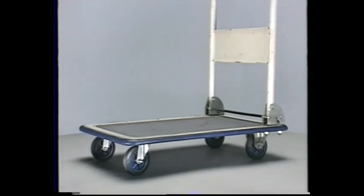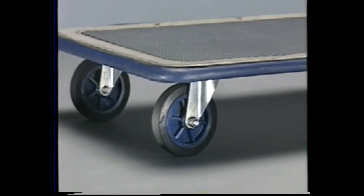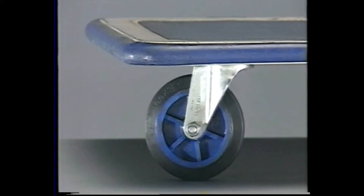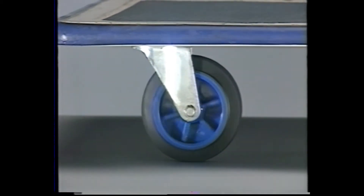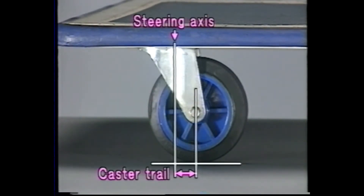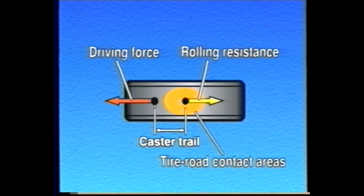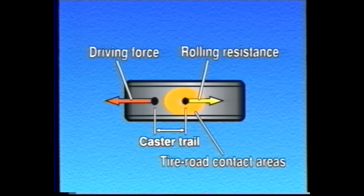Let's examine the role of caster and caster trail using one wheel of a cart. When you push a cart fixed with this kind of caster, the cart moves straight smoothly in the direction pushed. Caster trail occurs because the center of wheel-to-road contact comes behind the steering axis. The tire friction at the center of the wheel-to-road contact area opposes the forward-acting force by the trail amount, providing stability while driving straight.